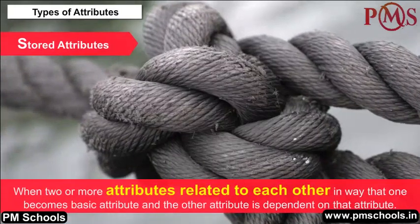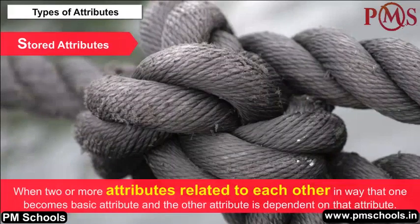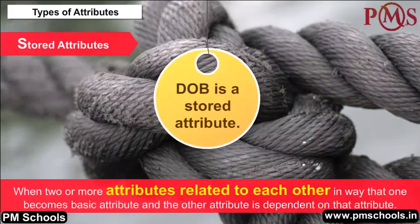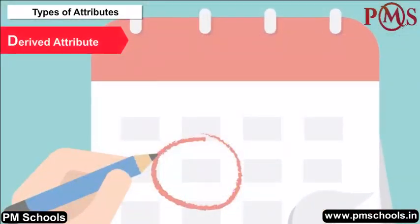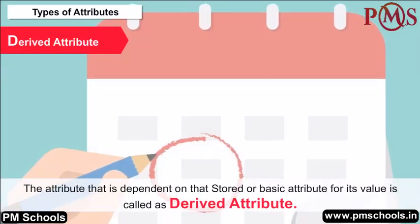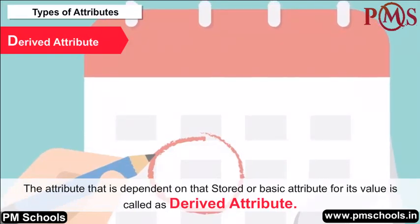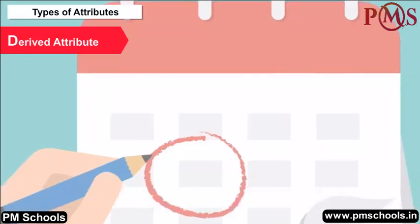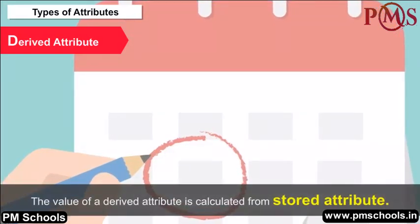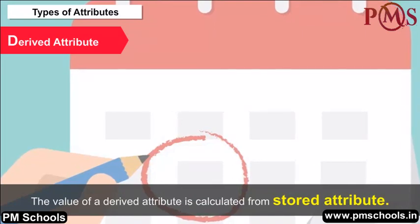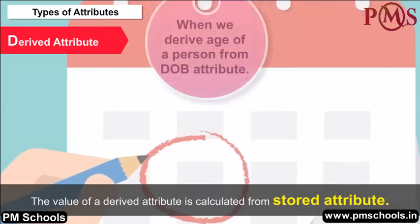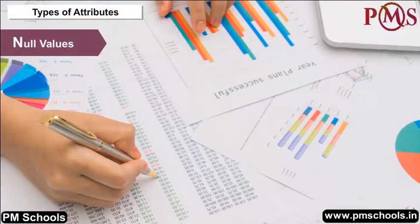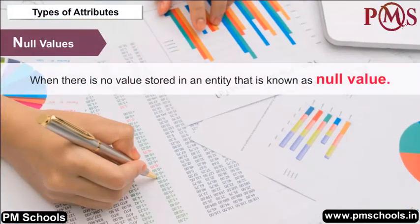Stored Attributes: When two or more attributes are related such that one becomes the basic attribute and another is dependent on it. For example, date of birth (DOB) is a stored attribute. Derived Attribute: The attribute that depends on the stored or basic attribute for its value is a derived attribute. Its value is calculated from the stored attribute — for example, when we derive the age of a person from the DOB attribute.